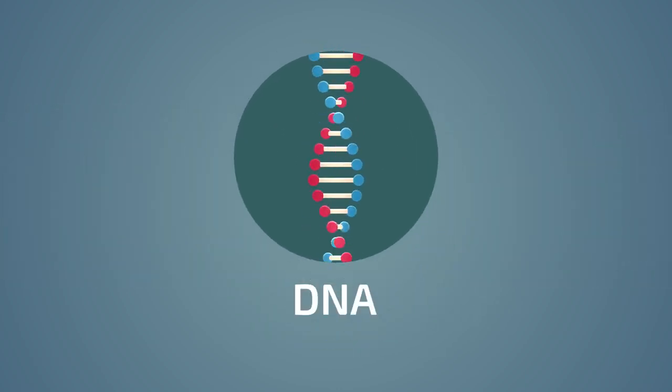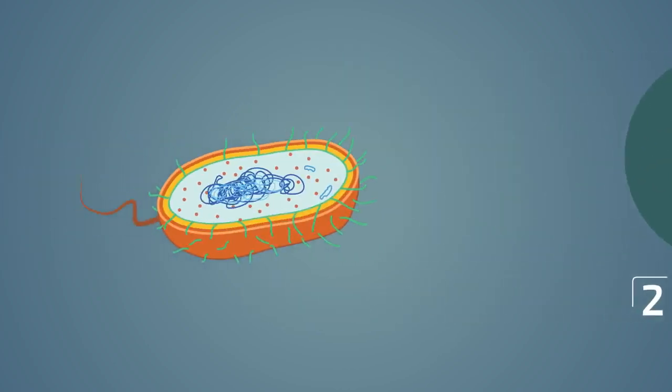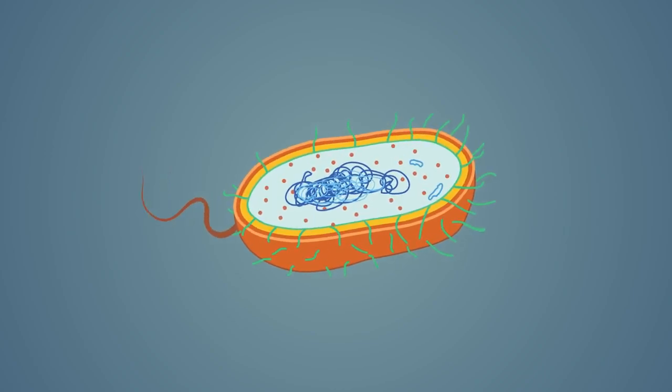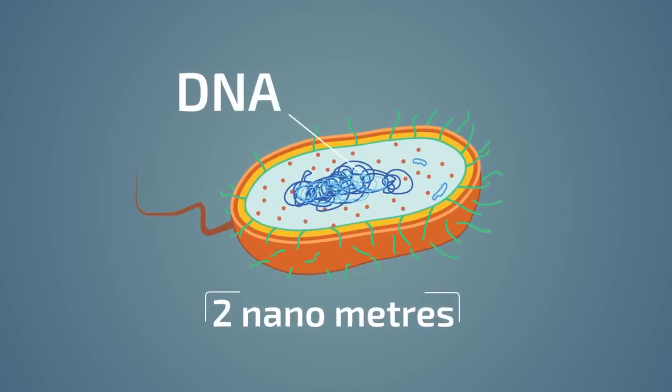Each of your cells contains an incredible 2 metres of DNA. It is possible to fit all that DNA in a tiny cell because the DNA is extremely narrow, only about 2 nanometres, and it is tightly wound around proteins.